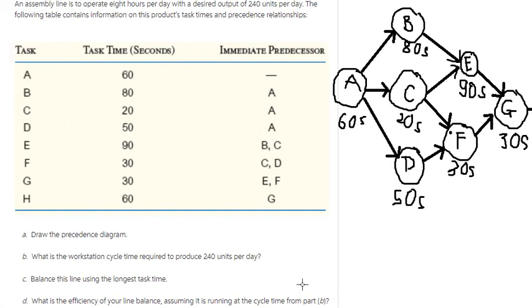We just finished question A. What is the workstation cycle time required to produce 240 units per day? So now we need to find the cycle time.